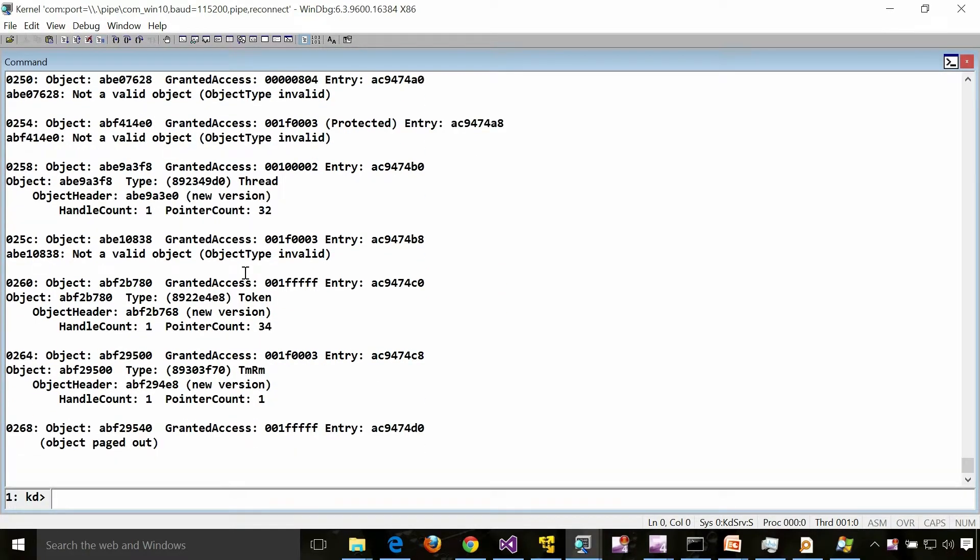We will get into the details of this a little later, not in this presentation. But a couple of things: this is a handle, this is a number which is visible to the user mode, and this is the object which it is pointing to.